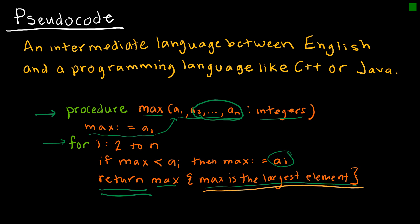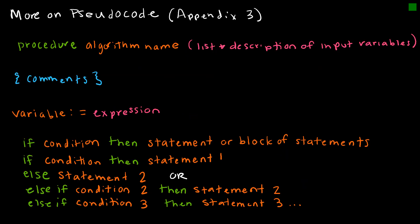Return, this is what tells us what the final output would be. So the return is the max where max is the largest element. Now, I want to point out that this here is just a note. It's a comment that helps us as a person understand, but it's not something that the computer would read. There is a whole lot on pseudocode in your textbook in Appendix 3. And I've just listed some of them here. So notice if you're going to do a procedure, we would first write procedure and then we would say what the algorithm name is. So on the last one, I said max. And then this is the list and description of the input variables. And that is what I did before. I said we're using a_1, a_2, a_3, etc. And those are all integers.